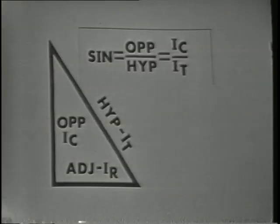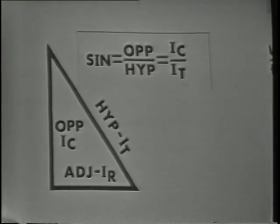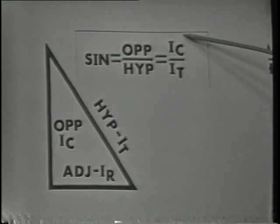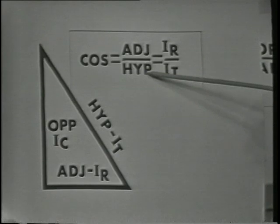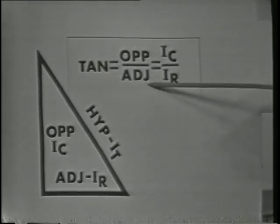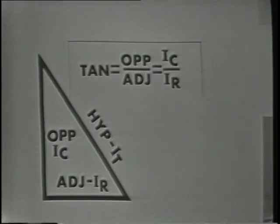The sine of angle theta is found by dividing the opposite by the hypotenuse, or IC over IT. The cosine of angle theta equals the adjacent side over the hypotenuse, or IR over IT. And the tangent is equal to the opposite over the adjacent, or IC divided by IR. When the division is accomplished, the sine, cosine, or tangent will equal a whole number or a decimal fraction that may be used to locate the phase angle in the trig tables. In other words, when we solve for the sine, cosine, or tangent, we're finding the ratio of one current to the other, which determines angle theta. Taking this number to the trig tables, the angle may be found.